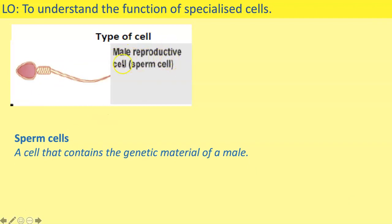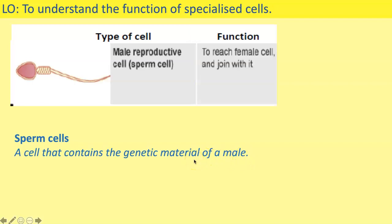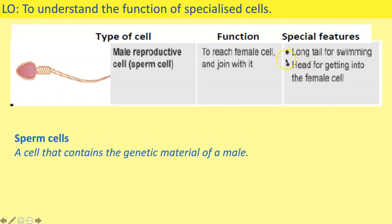Next we have the male reproductive cell, also known as the sperm cell. A sperm cell contains the genetic material of a male. Its function is to reach a female cell and join with it. Its special features are a long tail for swimming and a head to allow it to get into the female egg cell — it needs to swim to the cell and burrow in to fertilize it. Make your card sort — diagram, name, function, special features — cut them out and put them to one side.